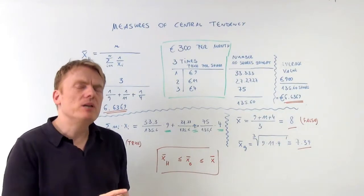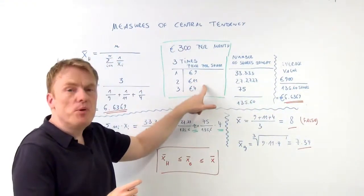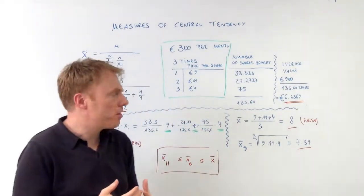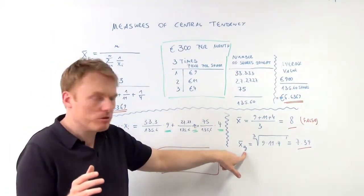The arithmetic mean is not correct because there are different numbers of shares bought in every month, nor is the geometric mean.